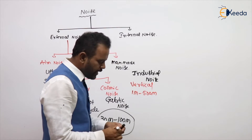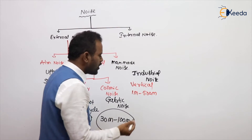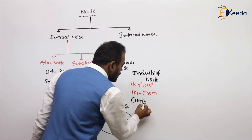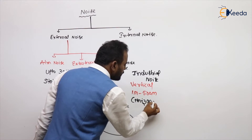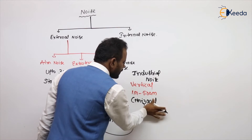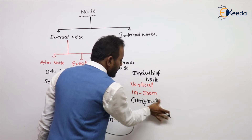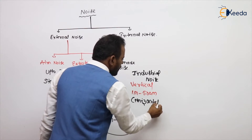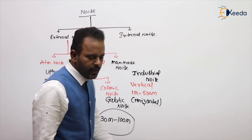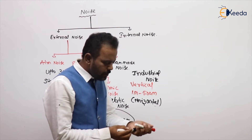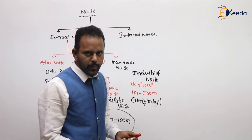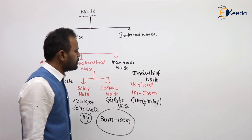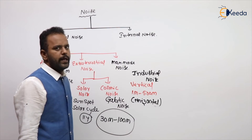That is why in TV transmission we are using horizontal polarization — to avoid the vertically polarized man-made noise. This is about man-made noise, and all those types come under external noise.